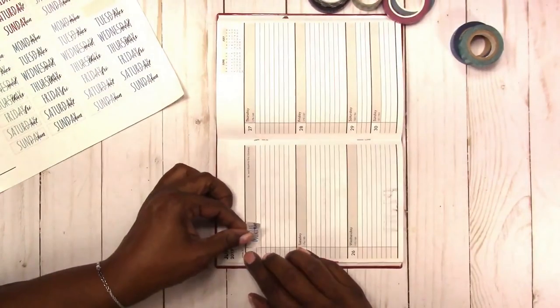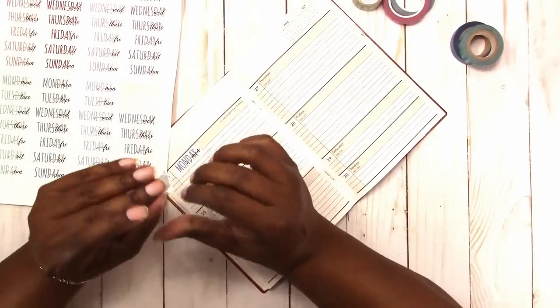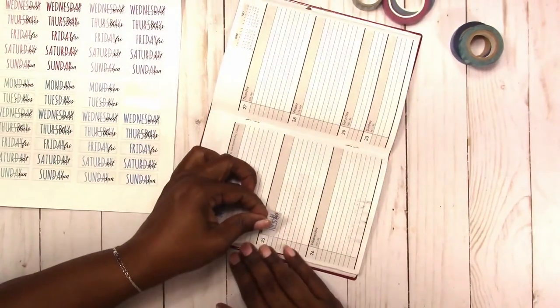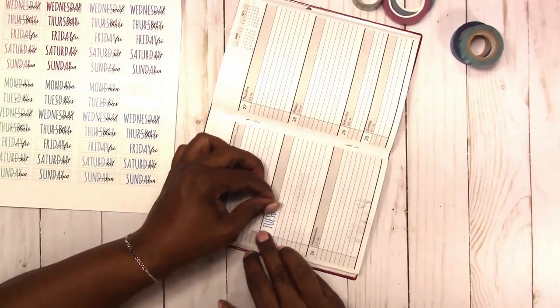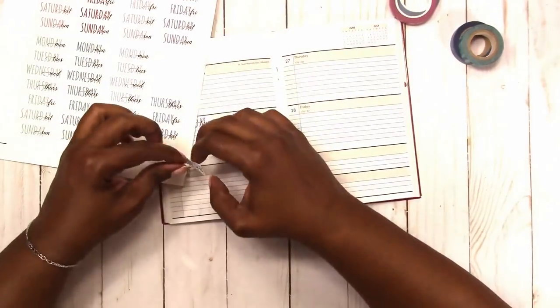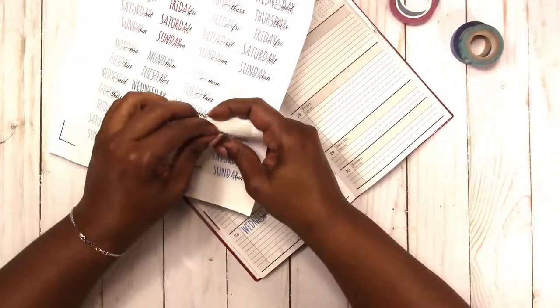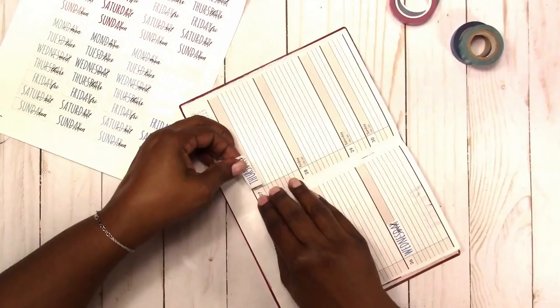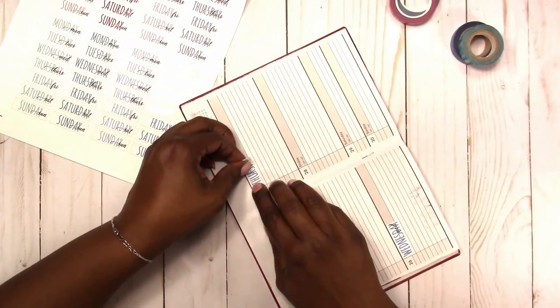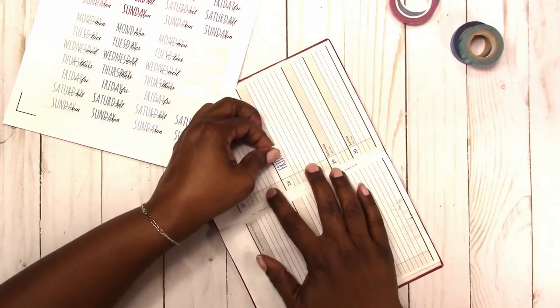I'm using the dark blue date covers. Again, these are free on my website. You can cut them with a Silhouette or Cricut or you can cut them by hand. And if you're interested in date cover-ups, I also recently uploaded a video that shows how to make your own date covers. So I'll put that information in the i above and in the description box below so you can go check that out.